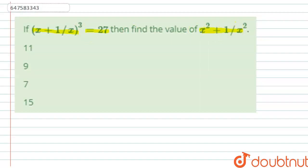Friends, we have 4 options. The first option is 11, the second option is 9, the third option is 7, and the fourth option is 15. So, let's see the solution to this question.